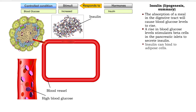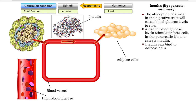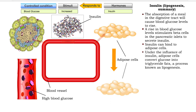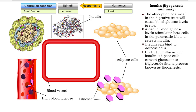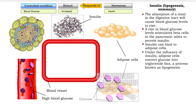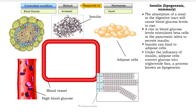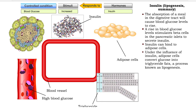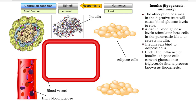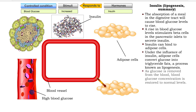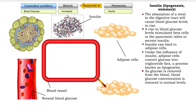Insulin can bind to adipose cells. Under the influence of insulin, adipose cells convert glucose into triglyceride and fats, a process known as lipogenesis. Blood glucose declines towards normal levels.